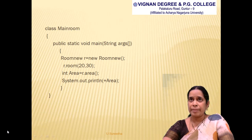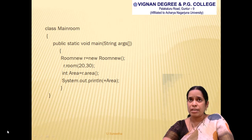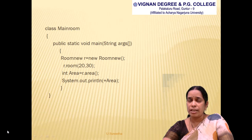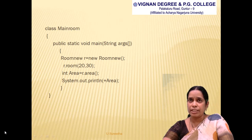The main class is 'MainRoom'. Within its main method, an object 'r' is created for class RoomNew, since RoomNew holds all the inherited and own members. Using object 'r', we call r.room(20, 30), so 'len' holds 20 and 'bre' holds 30. Then r.area() is called, multiplying 20 by 30, giving 600. The output of this program is 600.